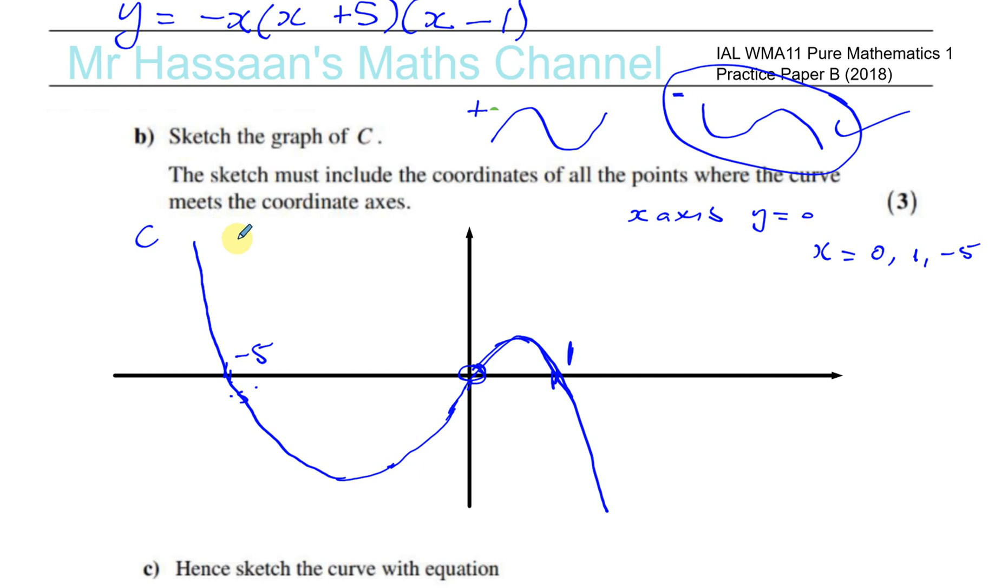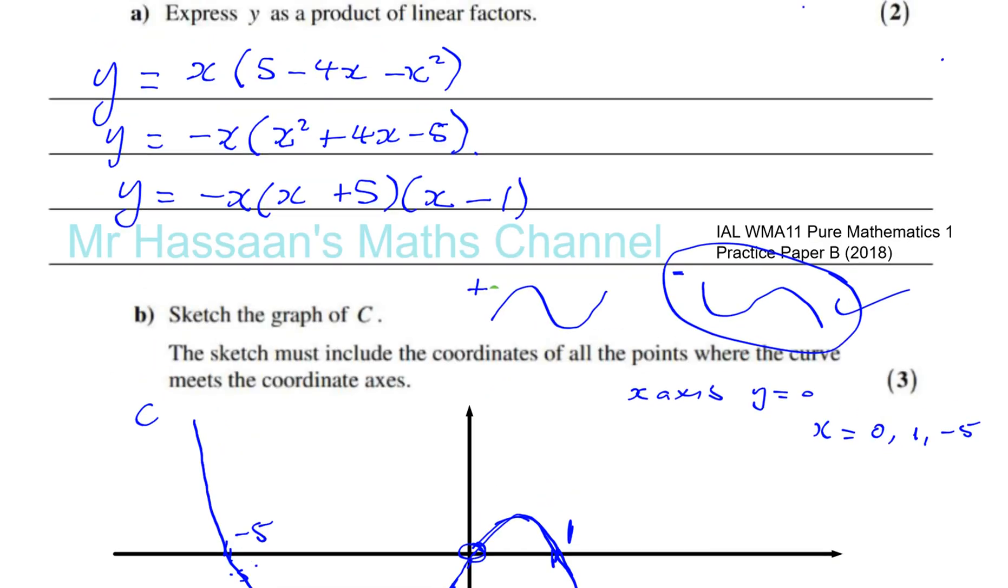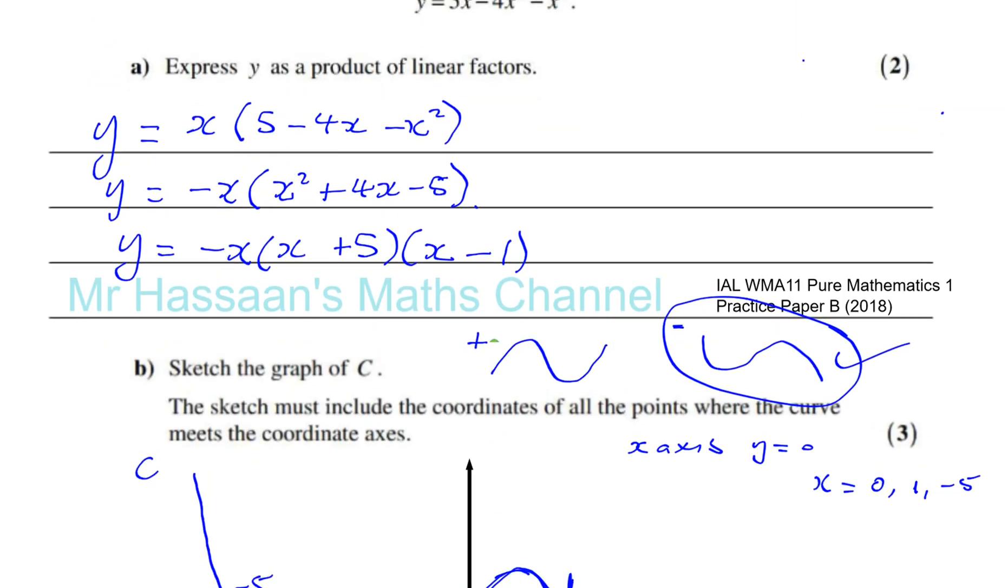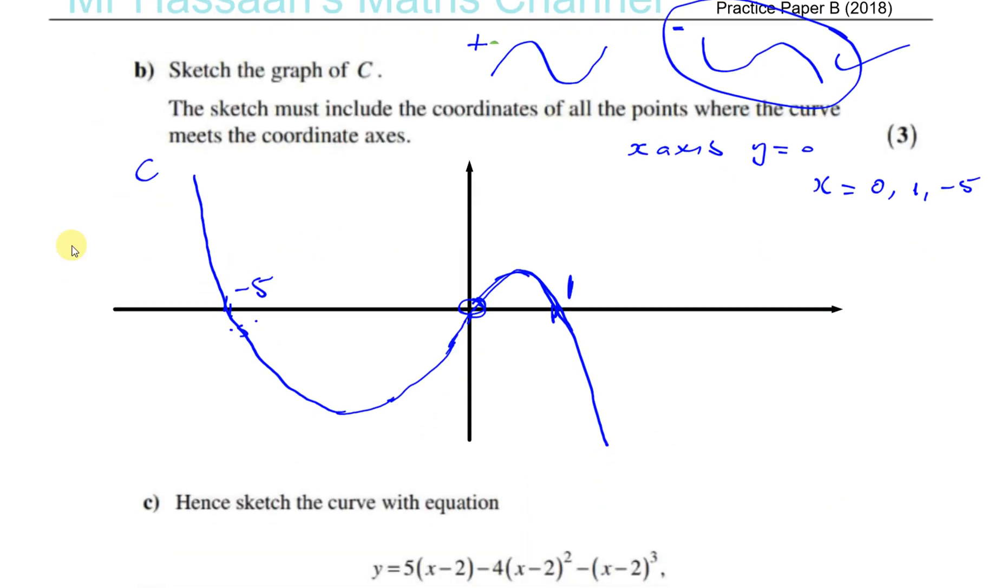So there you have your graph of Y equals 5X minus 4X squared minus X cubed. So it must include the coordinates of all the points where the curve meets the coordinate axes. Minus 5, the origin, 1. That's fine. And the graph should really be one stroke. You try and do your best. It's a bit difficult with the tool I have. So that's the best I can do. But I'm sure you can do better.